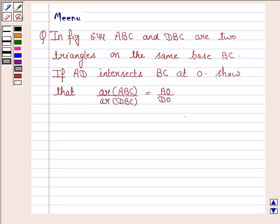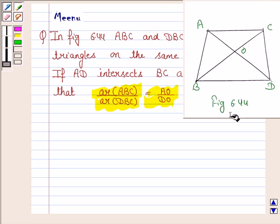If AD intersects BC at O, show that area of triangle ABC upon area of triangle DBC is equal to AO upon DO. And this is the figure 6.44 here, ABC and the triangle DBC stands on the same base.